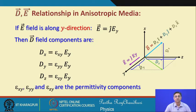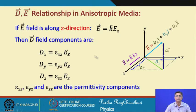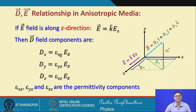If the electric field is incident along the z-axis, the displacement vector will again be along a direction not along z. We decompose the displacement vector along the three mutually orthogonal axes: dx = ε_xz·Ez, dy = ε_yz·Ez, and dz = ε_zz·Ez, where ε_xz, ε_yz, and ε_zz are the permittivity components in this case.